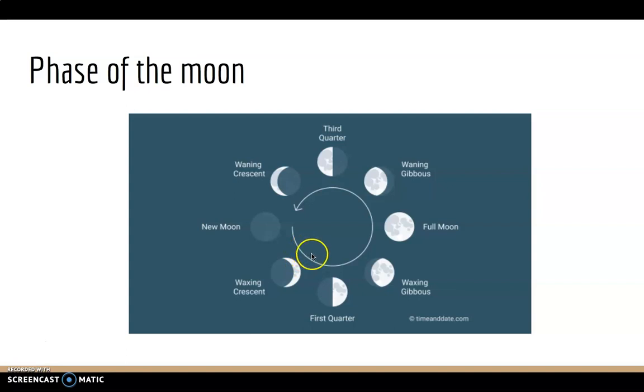And last but not least, we have phases of the Moon. So we can see that there are many kinds, like the Moon has different shapes because the sunlight changes in the Earth and the Moon goes around the Sun.